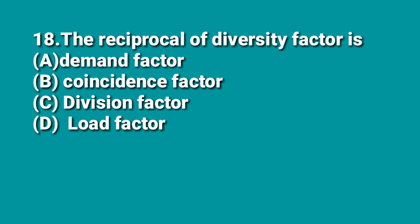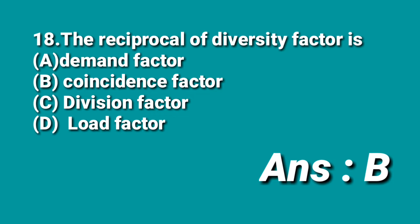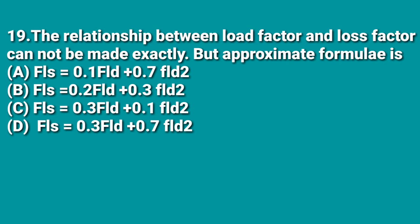The next question: the reciprocal of diversity factor is — A: demand factor, B: coincidence factor, C: division factor, D: load factor. The diversity factor is defined as the ratio of sum of individual maximum demands to the maximum demand; its reciprocal is the coincidence factor, so B is the correct answer. The relationship between load factor and loss factor cannot be made exactly, but the approximate formula is: Loss factor = 0.3·FLD + 0.7·FLD², which is answer D.